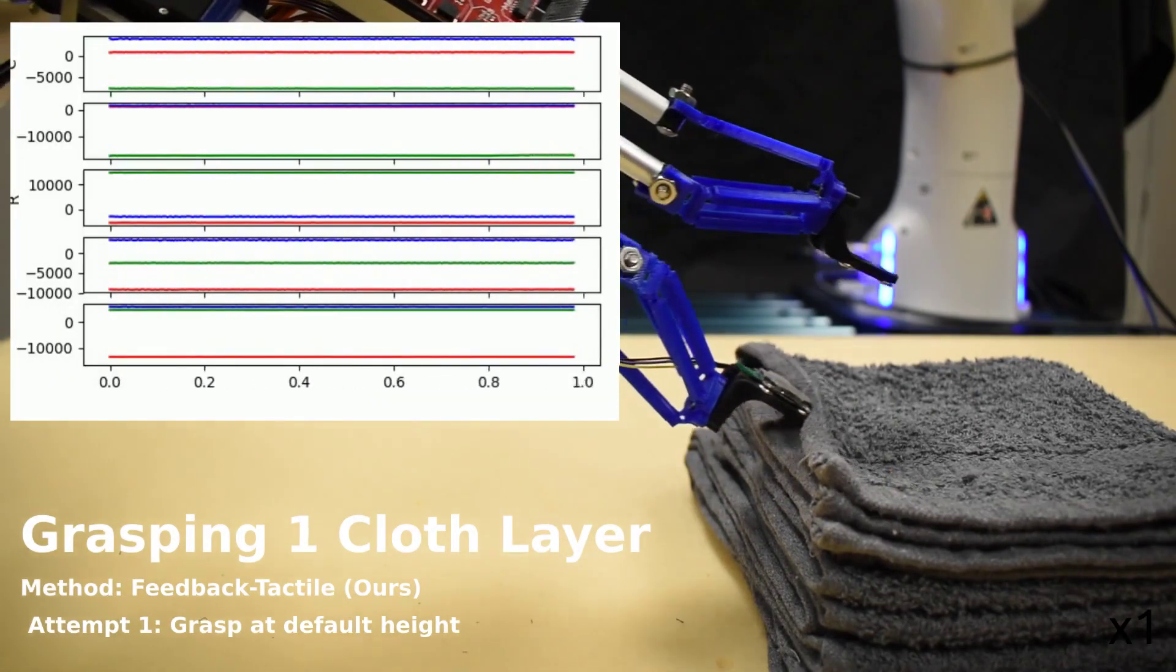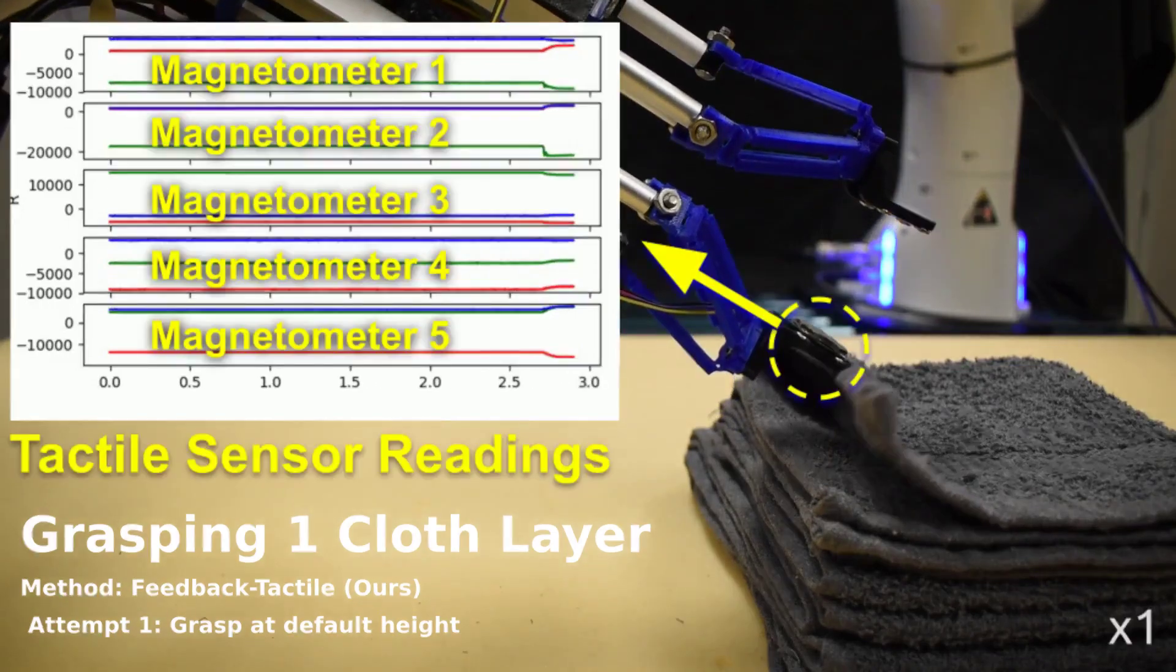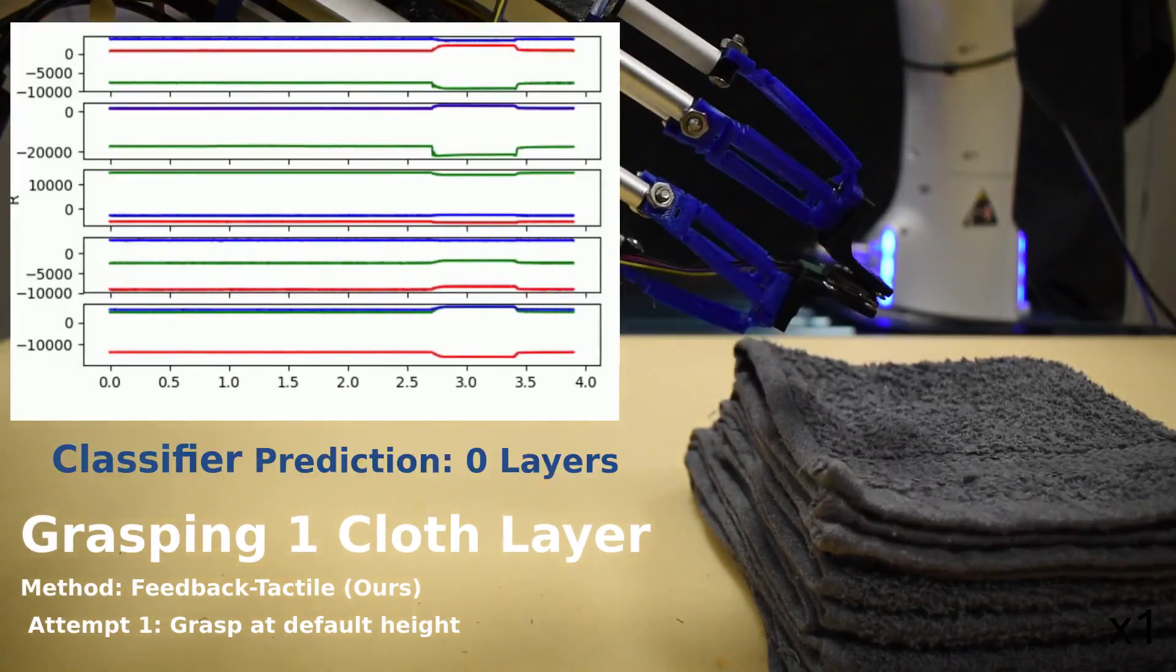Our tactile sensor provides the data in the plot to the classifier. Here, the classifier correctly predicts that zero layers are grasped.